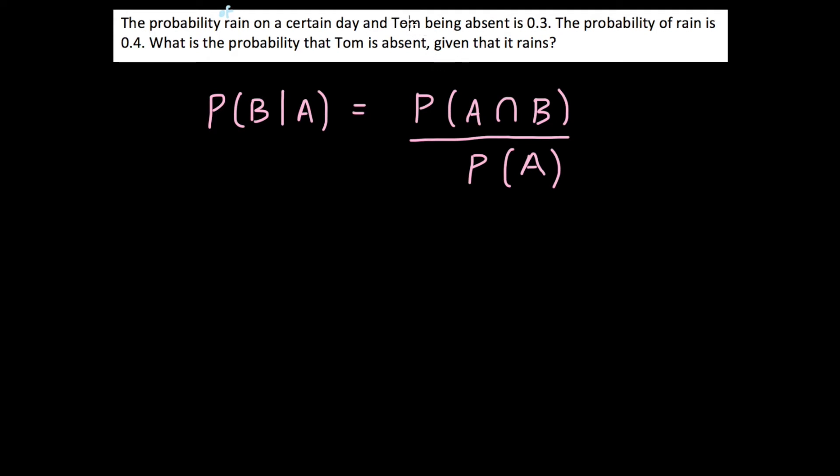And here we want to find out the probability that Tom is absent given that it rains. So here, based on the phrasing of the question, we know that A is the event of rain and B is Tom being absent. So based on the question, we are able to find out that we want to find the conditional probability of B given A.